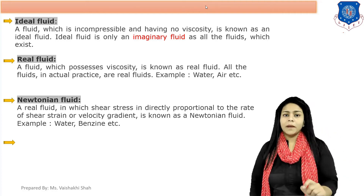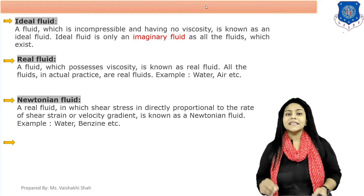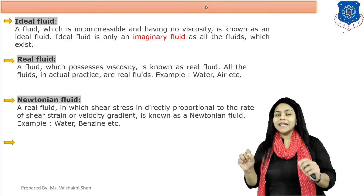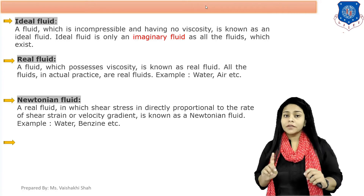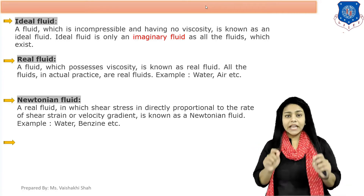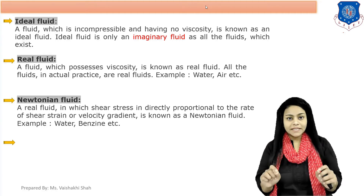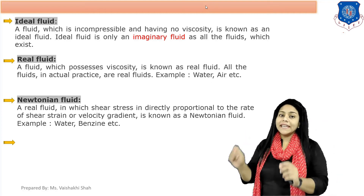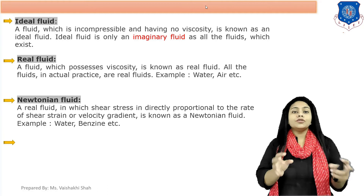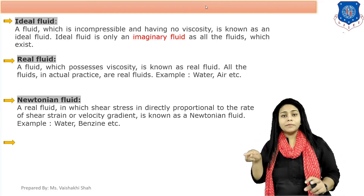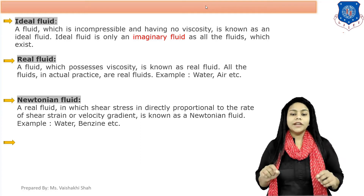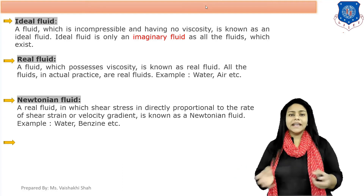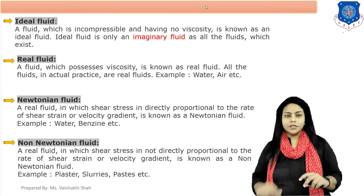The third type is Newtonian fluid. From Newton's law of viscosity, tau is shear stress and du/dy is shear strain rate. If tau is proportional to du/dy, that fluid is called a Newtonian fluid. Examples of Newtonian fluids include water, benzene, etc.